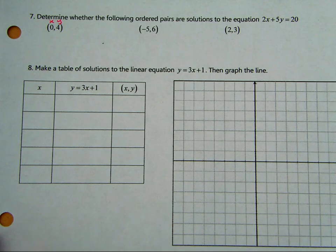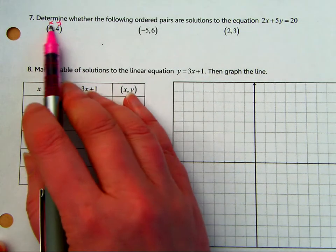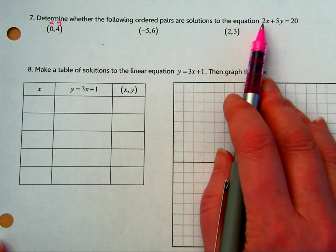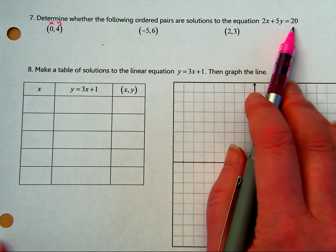Okay, so we're going to determine whether this ordered pair, 0, 4, is a solution of the equation 2x plus 5y equals 20.